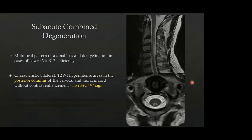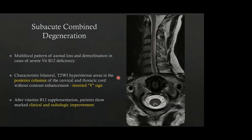Subacute combined degeneration is usually a metabolic phenomenon; however, it can lead to axonal loss and demyelination in cases of severe vitamin B12 deficiency. On MRI, characteristic bilateral T2 hyperintense areas involve the posterior columns, giving the inverted V-sign appearance. This is important to diagnose because after vitamin B12 supplementation, these patients show marked clinical and radiological improvement.